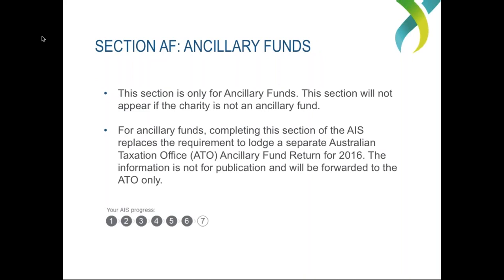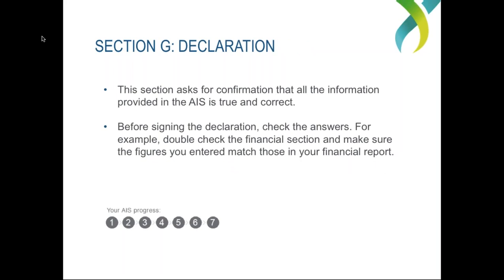Section AF, Ancillary Funds, is new to the 2016 Annual Information Statement and only applies to ancillary funds, so it probably won't appear for many of you. If it doesn't apply, this section won't appear when you complete the AIS. For those it does apply to, completing this section replaces the requirement to lodge a separate ATO Ancillary Fund return for 2016. However, this information is not for publication and will simply be forwarded to the ATO only.